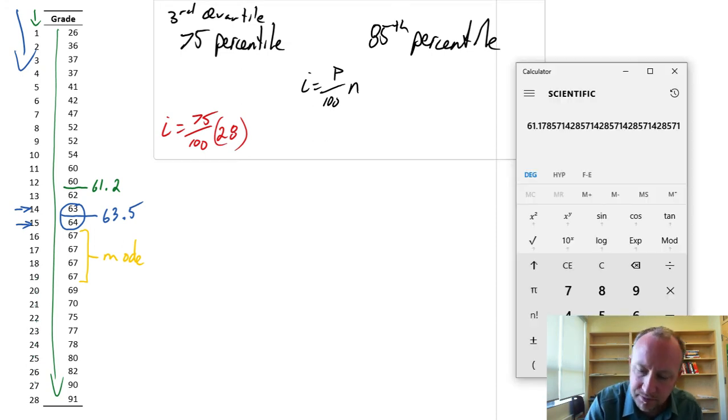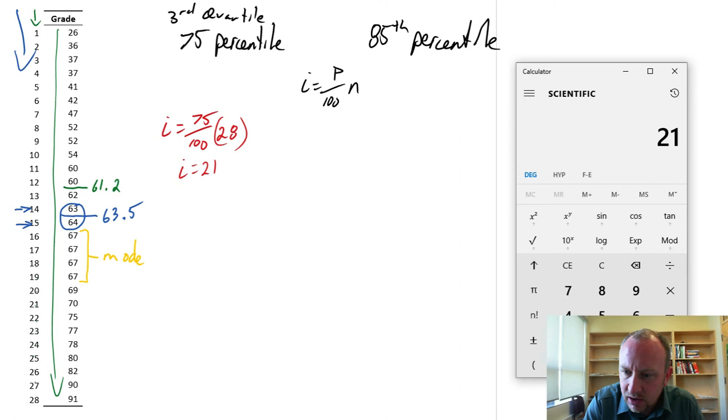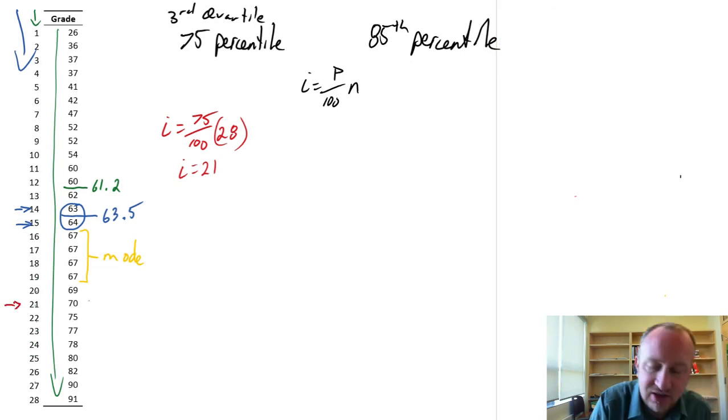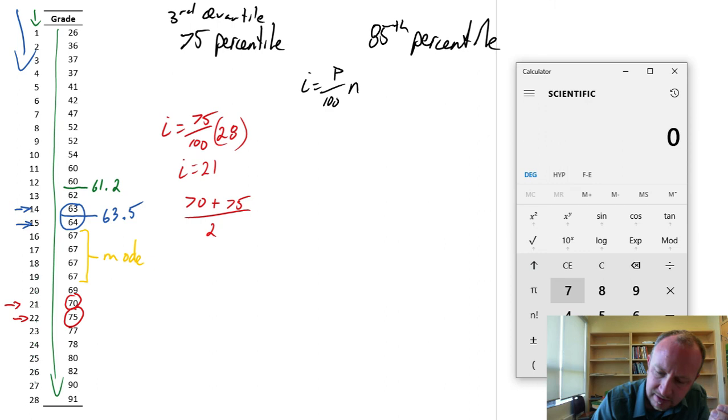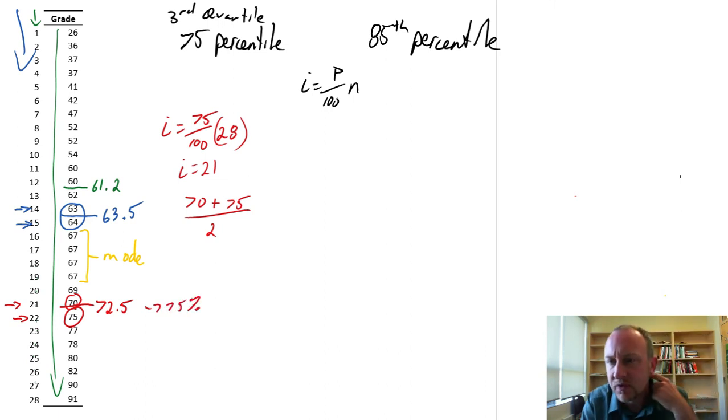I equals 75 over 100 times N, here is 28. So let me get my calculator. This will be 0.75. I won't skip a step. 75 divided by 100 times 28. This gives me an integer value of 21. So this is my 21st observation. Now because it's a whole integer, I need to take the average of the 21st and 22nd observation. So my 75th percentile will be the middle, or the average of 70 plus, I'm looking at these two, 70 plus 75 divided by 2. And so this is going to be 70 plus 75 divided by 2, 72.5. That's my 75th percentile, or my third quartile.